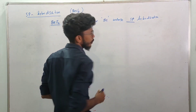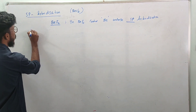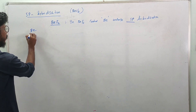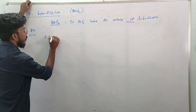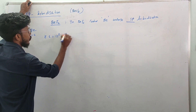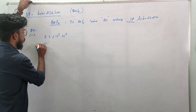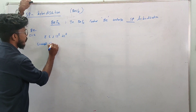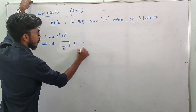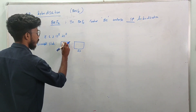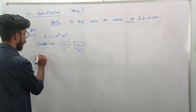First we look at the ground state configuration of beryllium: 1s2, 2s2. Then we look at the excited state — when we add energy, the atom goes into an excited state.